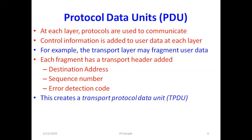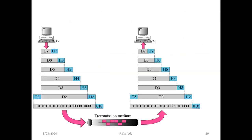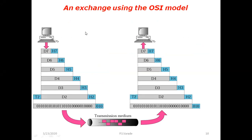Now you see here what this diagram talks about — an exchange using the OSI model. We are exchanging data, sending packets, exchanging frames from place A to place B. There are seven layers, D1 to D7, on both sides.